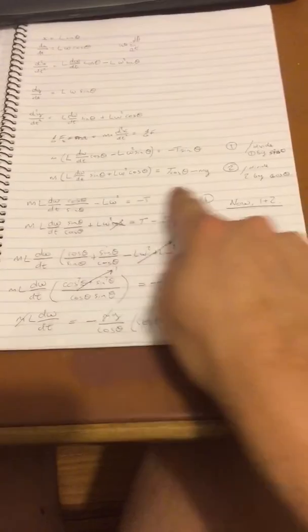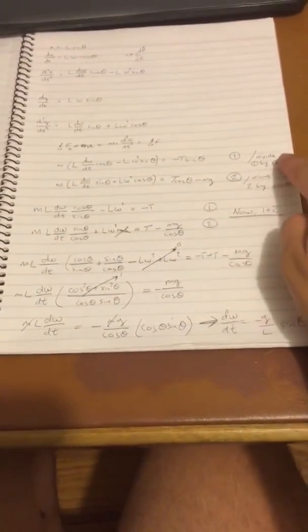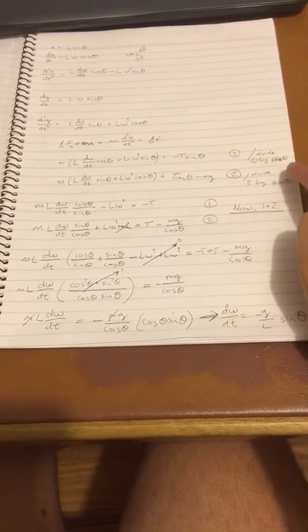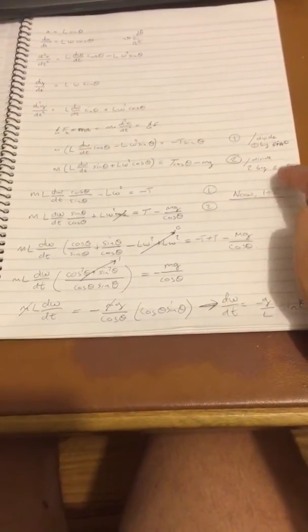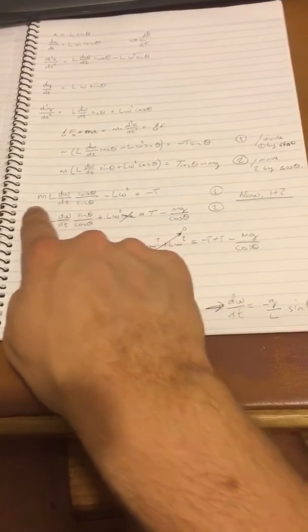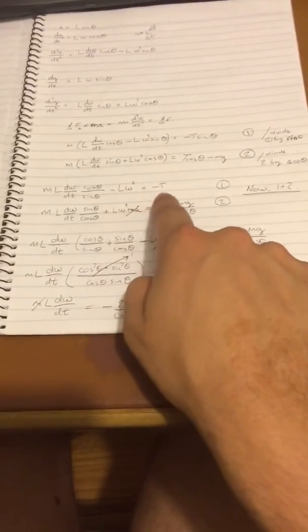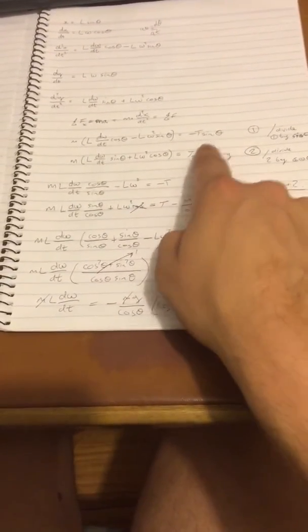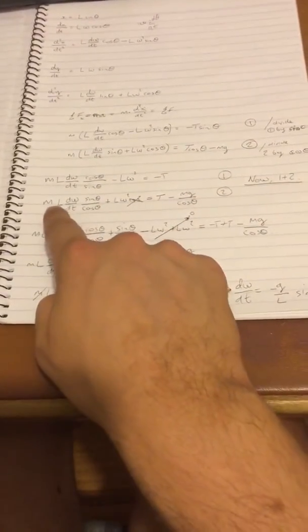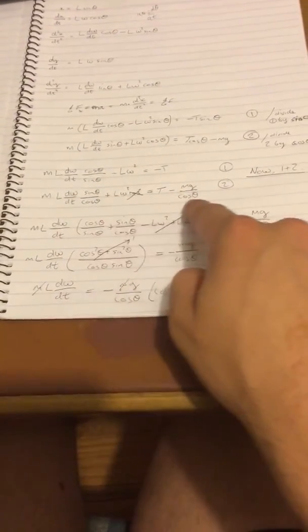So these are the two equations you need to get to, and now we're going to do some maths. So we're going to divide equation 1 by sine theta and divide equation 2 by cosine theta. So by dividing through by sine theta, you get a cosine theta over sine theta term, sine theta over sine theta is 1, minus T. Similar trick for 2, but we just divide through by cosine theta.